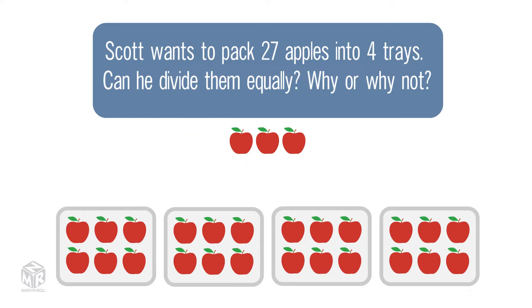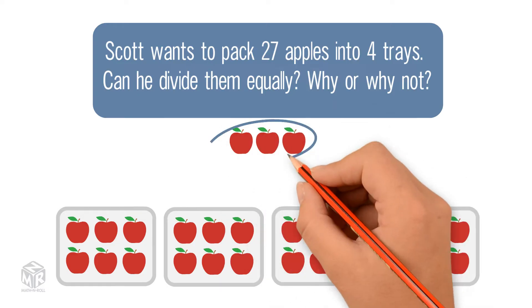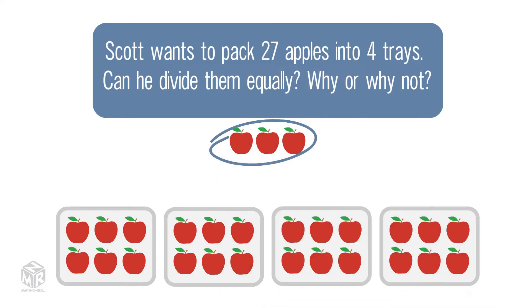We were not able to divide the 27 apples equally because we have 3 apples left over. When a number cannot be divided evenly, the amount left over is called the remainder. So 3 is our remainder.